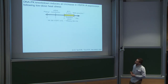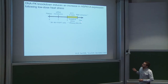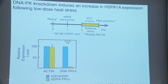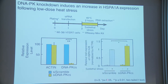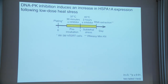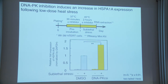To test DNA-PK's role, I performed a knockdown of DNA-PK using siRNA, then performed the sublethal stress, extracted RNA, and ran RT-qPCR. The knockdown of DNA-PK-CS, the catalytic subunit, was efficient. I found that knocking down DNA-PK leads to a significant increase in HSPA1A expression following low-dose stress. I then used DNA-PK inhibitors to confirm — the inhibitor also increases HSPA1A expression following low-dose heat stress, and this was reproducible in other cell lines including IMR90 and HD10AD.